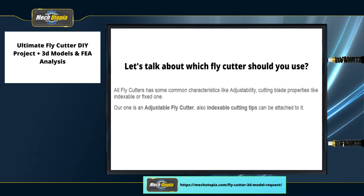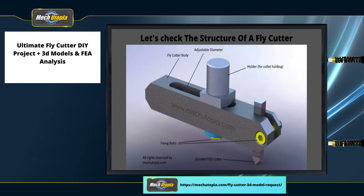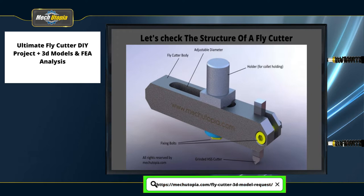All fly cutters have some common characteristics like adjustability and cutting blade properties — either indexable or fixed. Our fly cutter is adjustable and indexable cutting tips can be attached to it. A basic fly cutter consists of a few parts: part one — holder; part two — fly cutter body; part three — cutting blade; part four — fasteners.